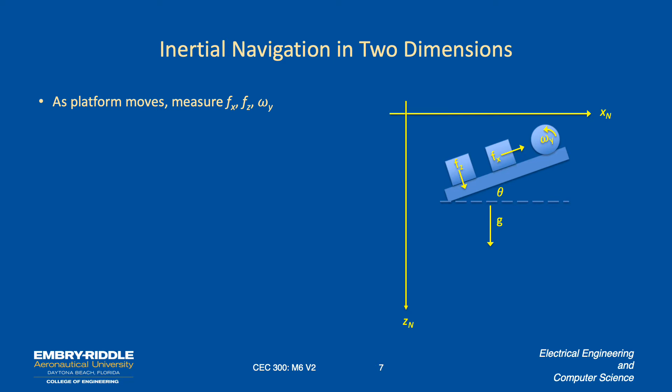So to get theta, we're going to measure the acceleration in the X direction, the acceleration in the Z direction, or the forces, whichever one you want to call it. And we measure the rotational rate around Y, omega Y.